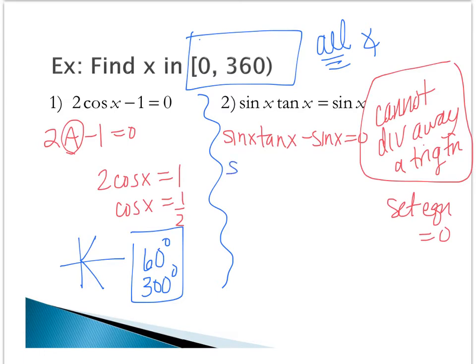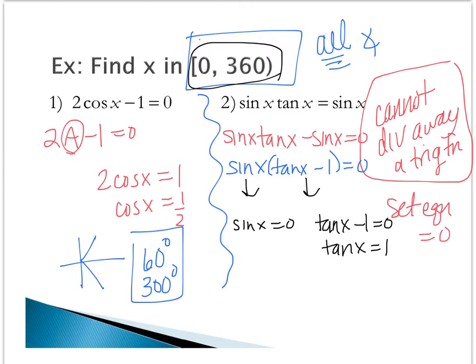Sine is a common factor, so I can factor it out. And now here, I have two little mini problems that I want to solve. When does sine of x equal 0, and when does tangent of x equal 1? We are looking for all angles in 0 to 360. The sine function equals 0 at 0 degrees and 180 degrees. And the tangent function equals 1 at 45 degrees and 225 degrees. So this problem has four solutions.